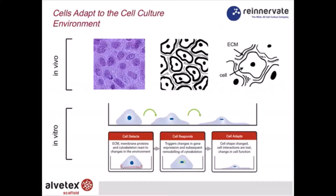When we grow cells in vitro in the tissue culture laboratory, we deconstruct those relationships between cells. Cells also come into contact with a flat substrate, most often polystyrene, and that causes a response. The cell adapts to this abnormal environment, changes shape, and as a consequence the internal cytoskeleton will remodel itself. This affects the shape of organelles, including the nucleus, which ultimately influences gene transcription.